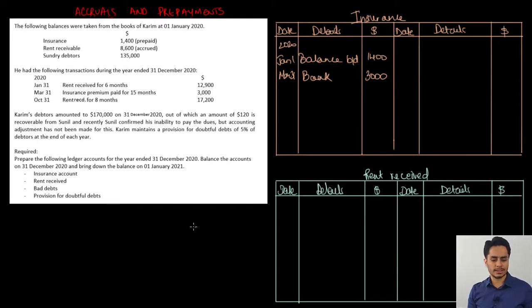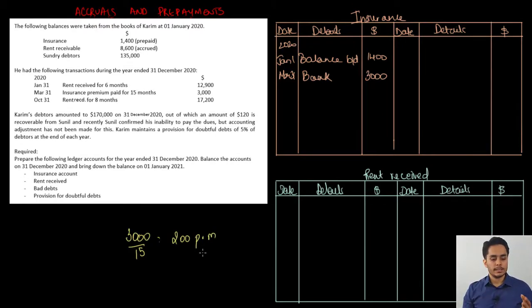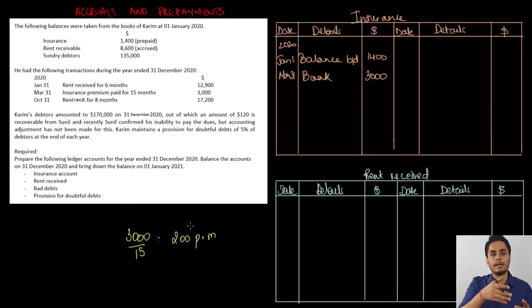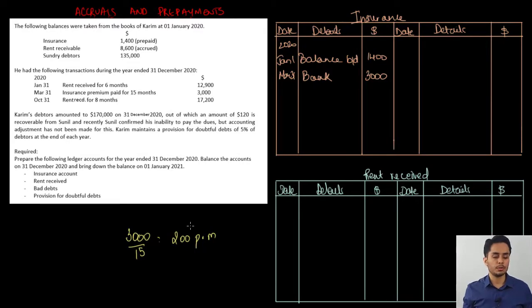The calculation is simple. $3,000 paid for 15 months gives $3,000 divided by 15, which is $200 per month. Now we need to see how many months are paid in advance. If the policy began on 1st April and you count 15 months from there, it goes to 30th June 2021. So the number of months beyond December 2020 would be 6 months — January to June 2021 — and hence 6 months of insurance is paid in advance.